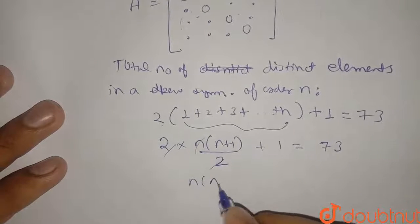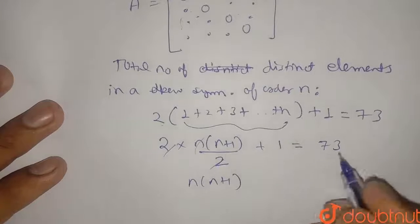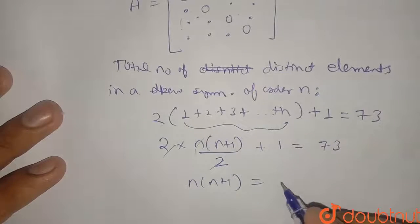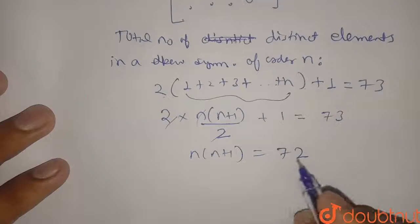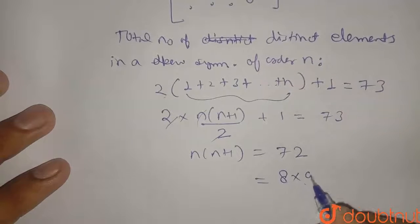So 2 to cancel, then n into n plus 1. I am taking this one to this side so it will be 73 minus 1 will be 72. So from here I can display this as 8 into 9.